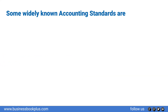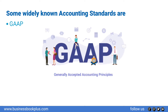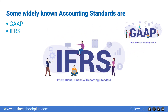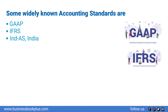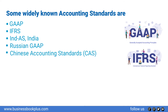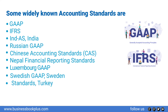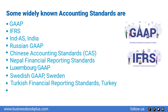Some widely known accounting standards are: GAAP (Generally Accepted Accounting Principles), IFRS (International Financial Reporting Standards), IND-AS (Indian Accounting Standards), Russian GAAP, Chinese Accounting Standards, NFRS (Nepal Financial Reporting Standards), LUX GAAP, Swedish GAAP (Generally Accepted Accounting Principles in Sweden), Turkish Financial Reporting Standards, and Swiss GAAP (followed in Switzerland).